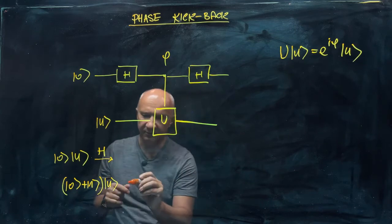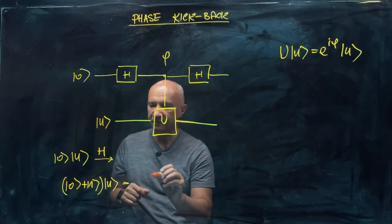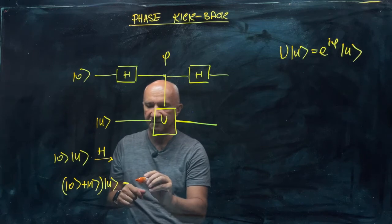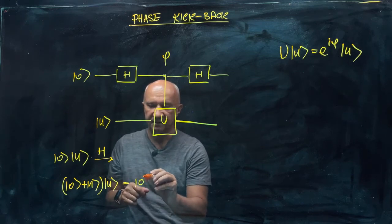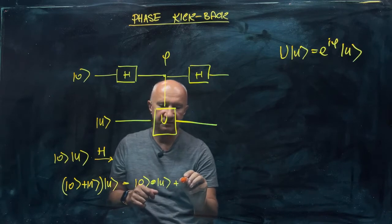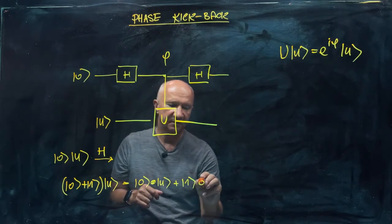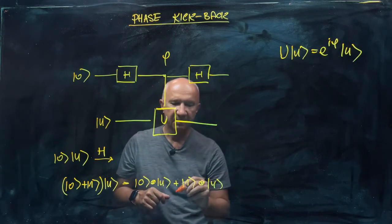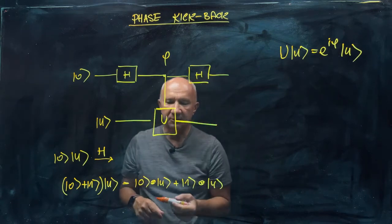And then, so, before we just look at the controlled U, let me just write this expression here more explicitly as zero tensor U plus one tensor U.